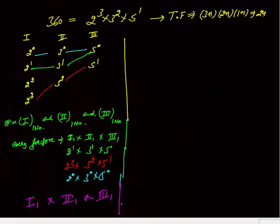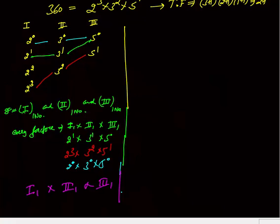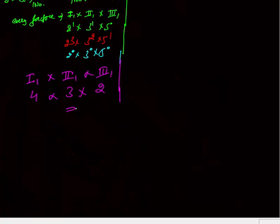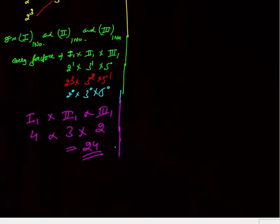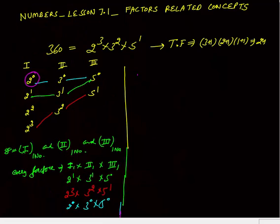The first group has 4 numbers (2⁰, 2¹, 2², 2³), the second has 3 numbers (3⁰, 3¹, 3²), and the third has 2 numbers (5⁰, 5¹). We take one from each and multiply, giving 4 × 3 × 2 = 24 total pairs — that is how the total factor count is derived.